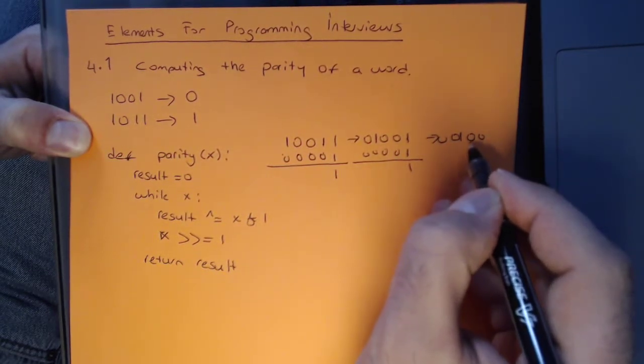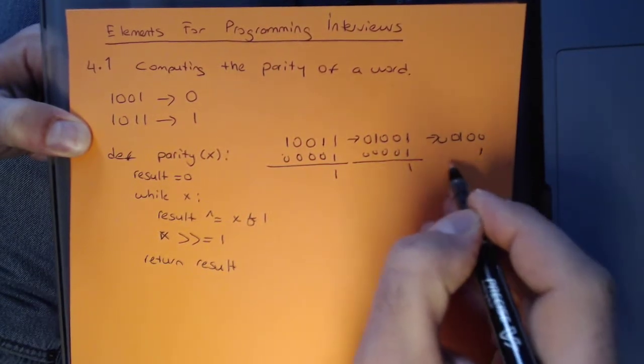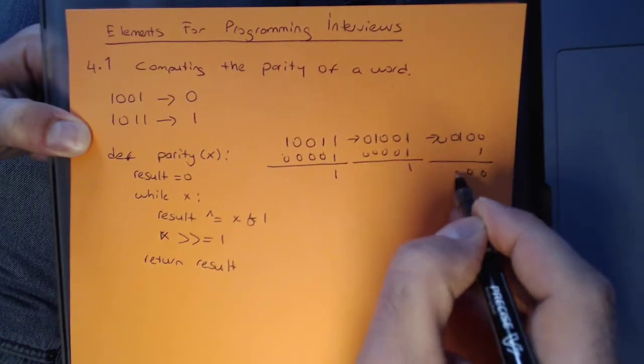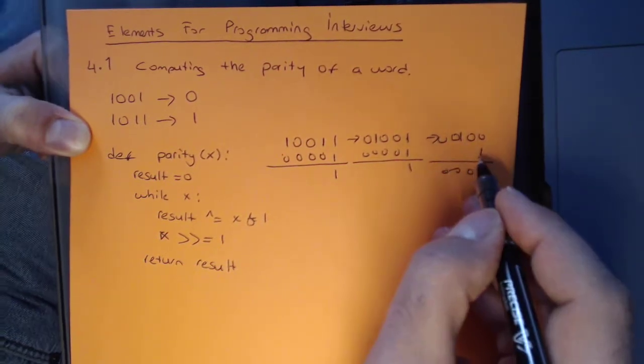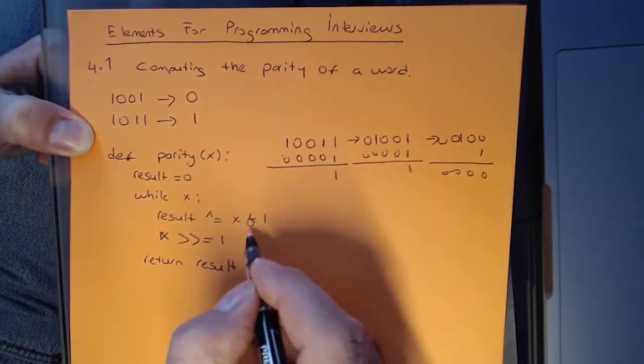We right-shift again. And then we AND it with 1, it becomes 0. So you see how we are right-shifting and ANDing, and we are getting either 1 or 0. That's what this is doing.